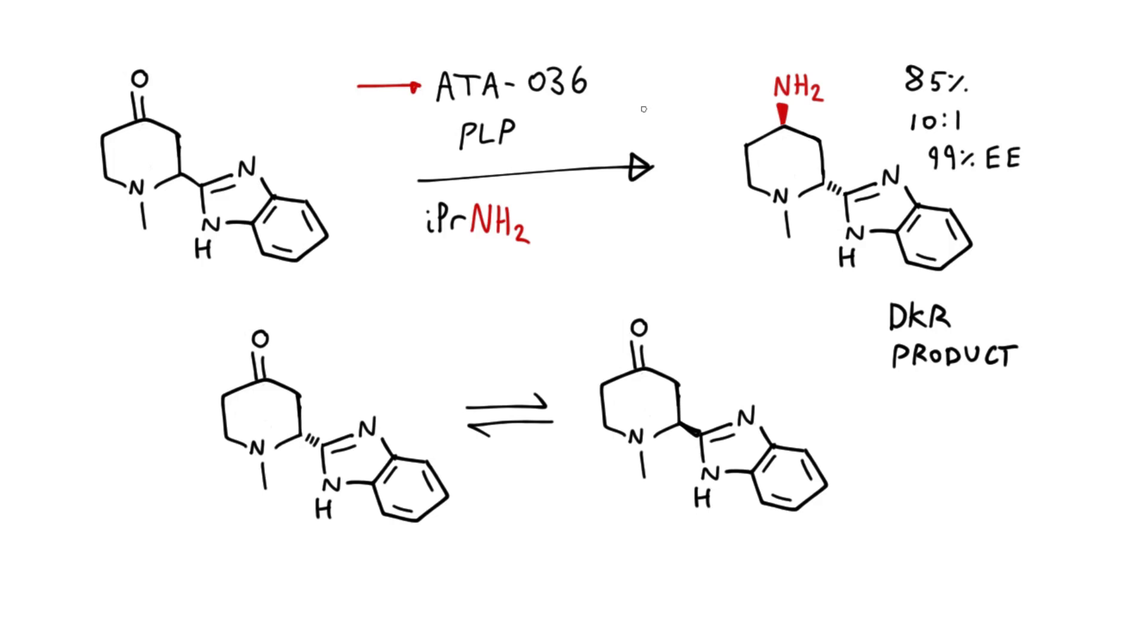And this enzyme is a transaminase, so what it means is it's swapping out the amino group from the isopropyl amine with the ketone of our substrate, and it affords a 10-to-1 mixture of the trans-to-cis substituted piperidine rings.